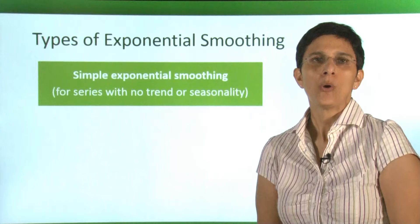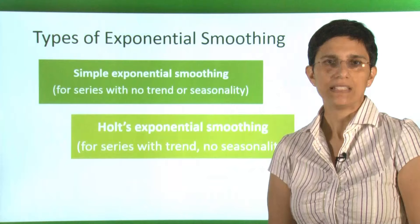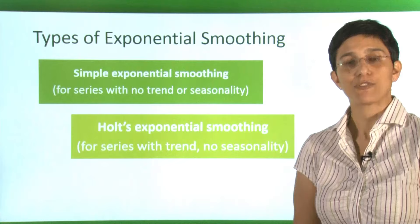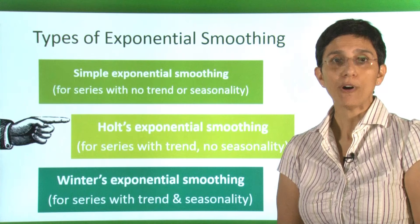We're going to look at three types of exponential smoothing. We already looked at simple exponential smoothing, which is adequate for series that have no trend and no seasonality. Now we're going to look at Holt's exponential smoothing, which works for series that have trend but no seasonality. Later, we'll see Winter's exponential smoothing, which can handle both trend and seasonality. In this video, we're focusing on Holt's exponential smoothing.